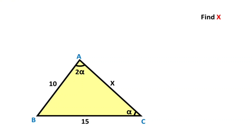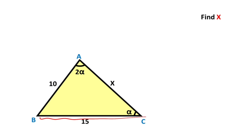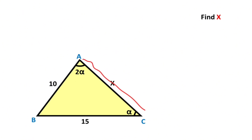Hello everyone. In this video we will cover a triangle question and apply six different solutions. This length is given 10 units and here is given 15 units. Here is alpha and this angle is given 2-alpha, and X is asked. Let's start with the first method.